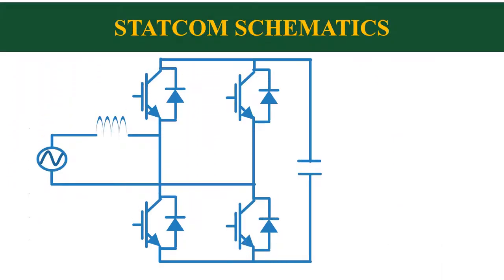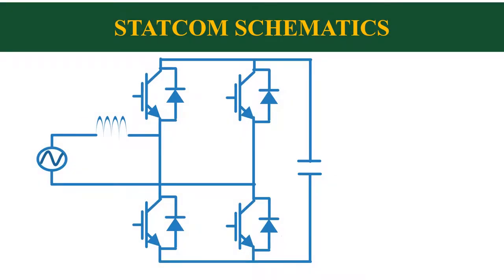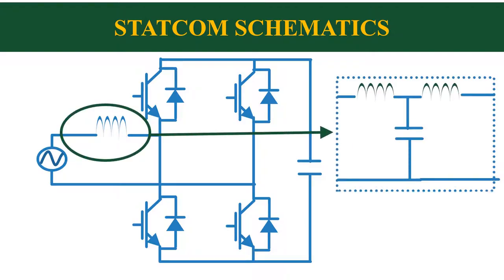This is the basic structure of a single phase Statcom. It consists of a voltage source inverter used to convert the DC input voltage to AC output voltage. The inverter can be realized using any power electronic devices such as MOSFET, IGBT, etc. A capacitor is used at the input to supply a constant voltage to the inverter. An inductor is used at the grid side for the filtering of high frequency components in the current generated by the inverter. Instead of L-filter, we can also use an LCL filter for better filtering performance.